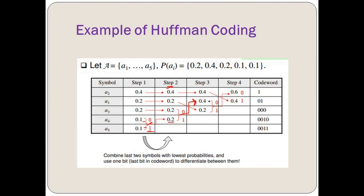We repeat the same step again: the two lowest probabilities 0.4 and 0.4 are added to give 0.6. Since 0.6 is greater than the remaining 0.4, it comes at the top. Upper branch is labeled 0, lower branch is 1. Finally, 0.6 and 0.4 are combined to give 1.0, which is our root node.